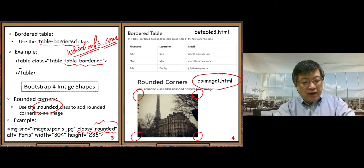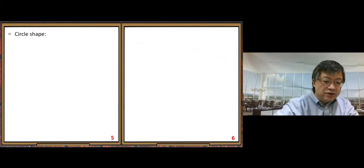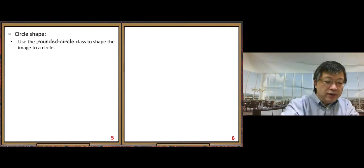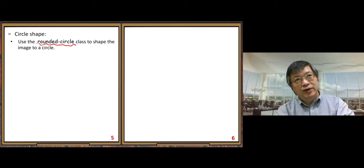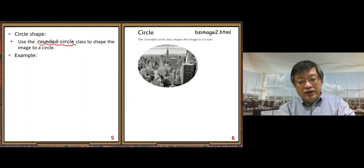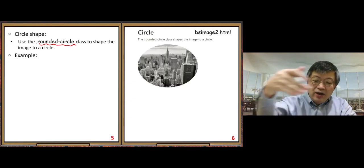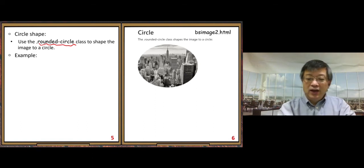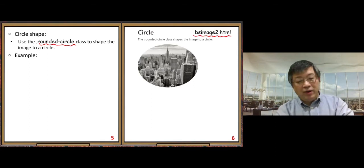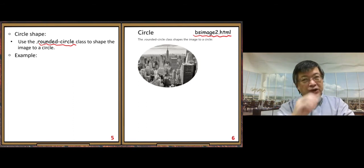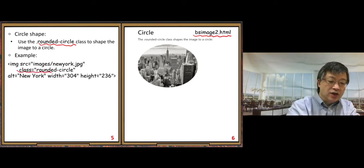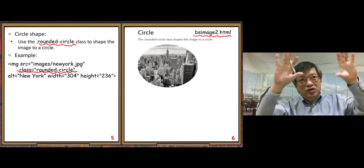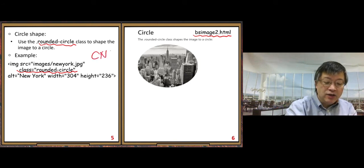The second image shape is the circle shape. Using the `rounded-circle` class, you can display an image inside a circle. This effect looks pretty good sometimes. You can look at example bsimage2.html — you just add the class `rounded-circle` to your image element.